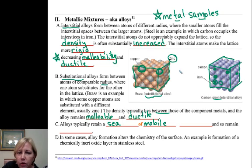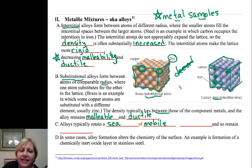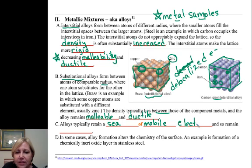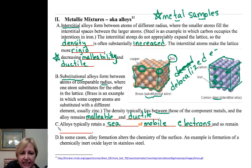Alloys typically retain that sea of mobile electrons. The electrons remain delocalized — they are not fixed to a particular atom — and so metal alloys typically remain electrically conducting.